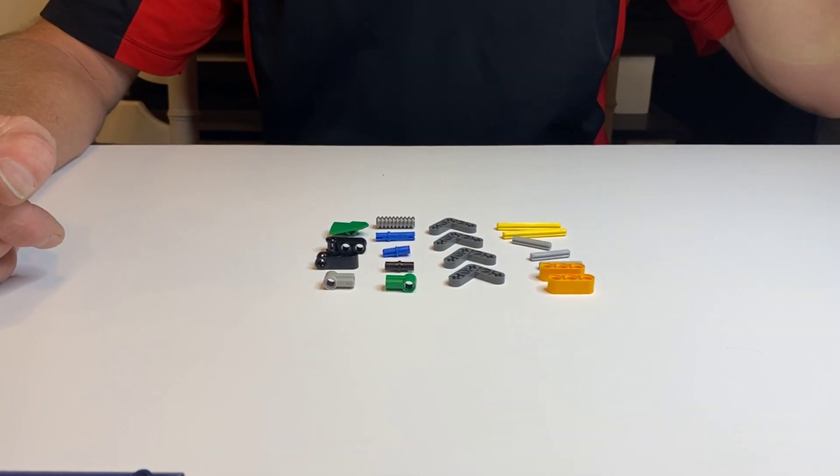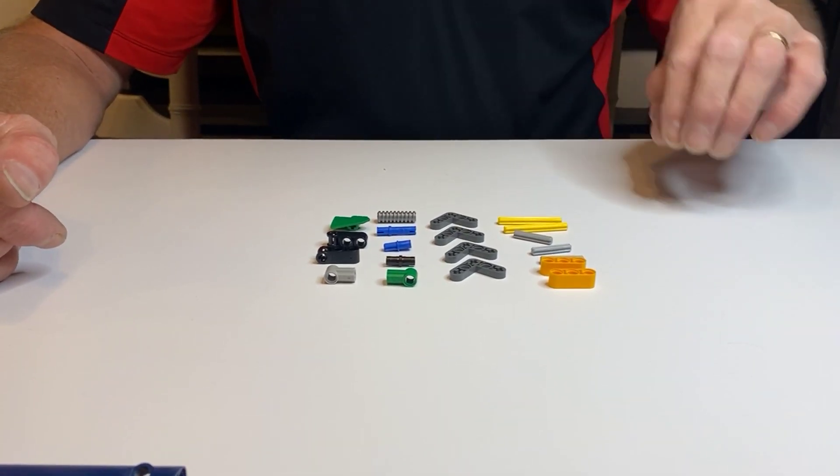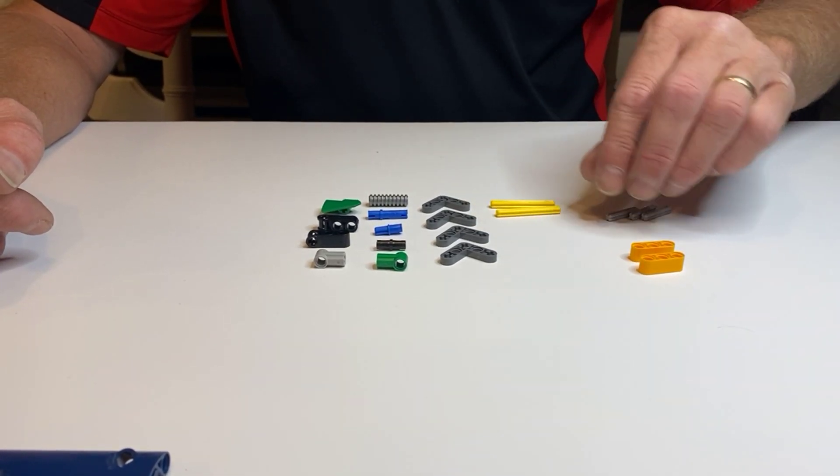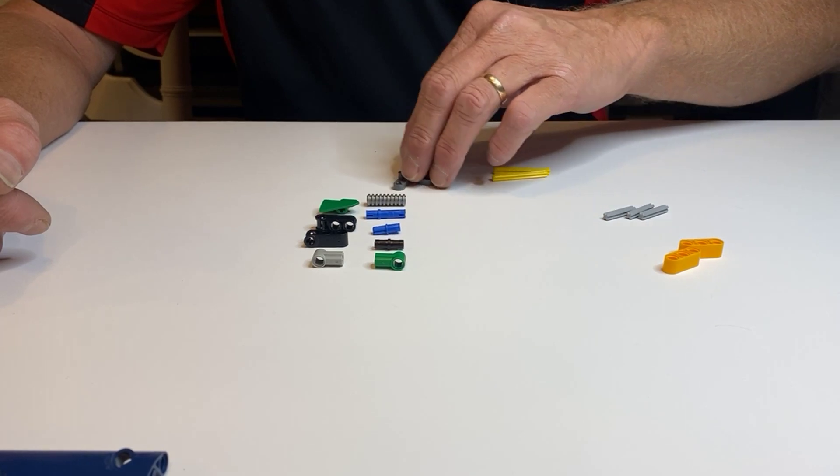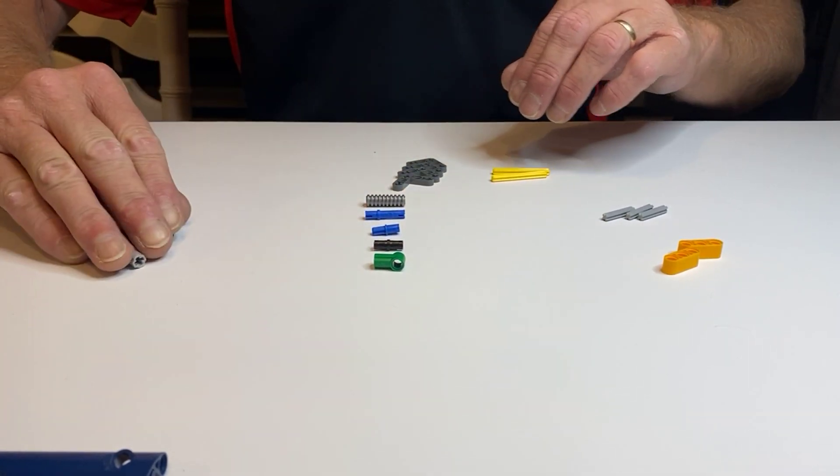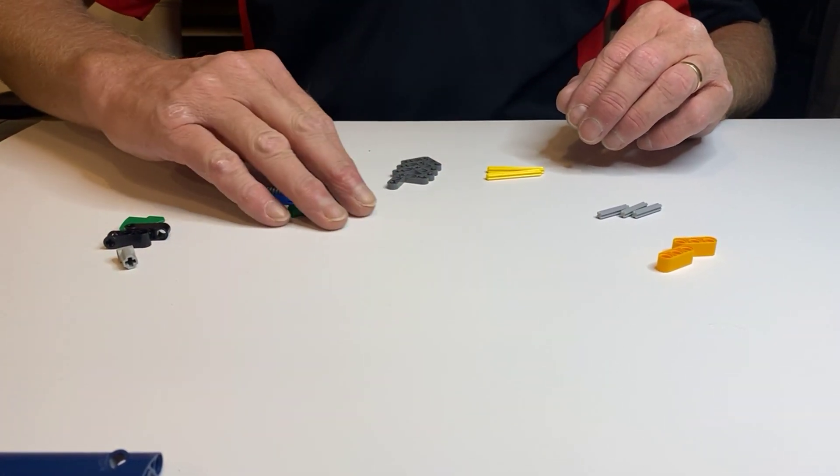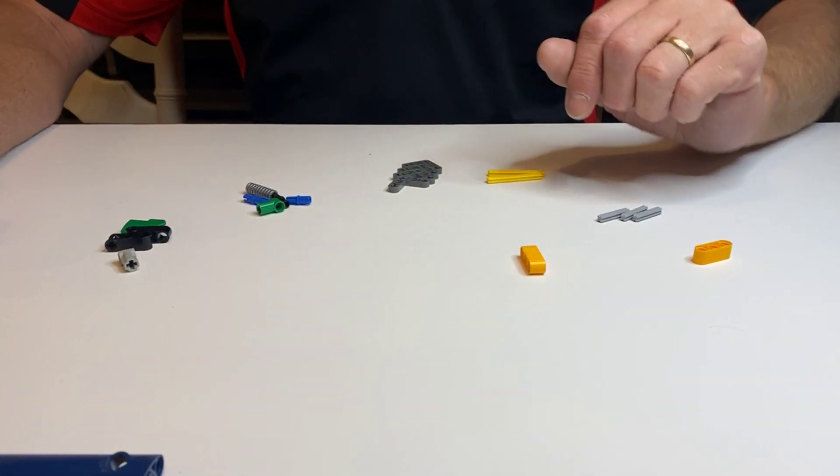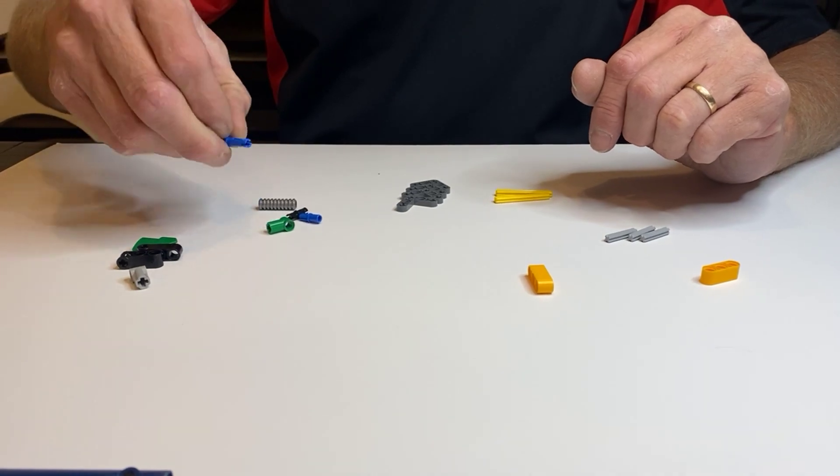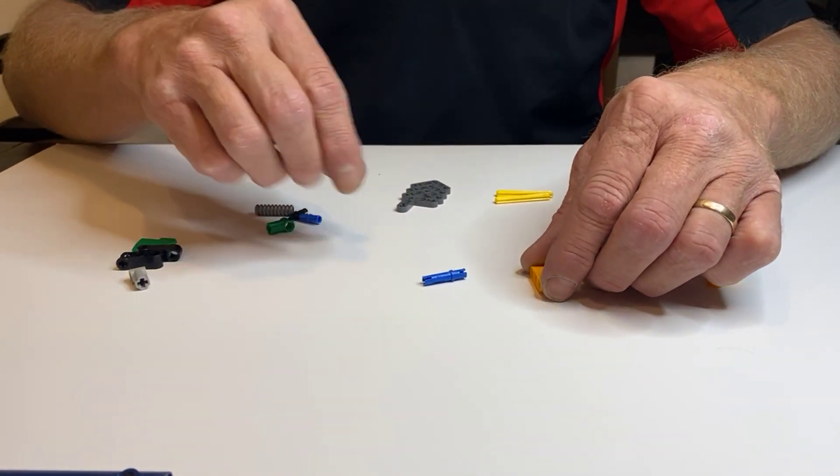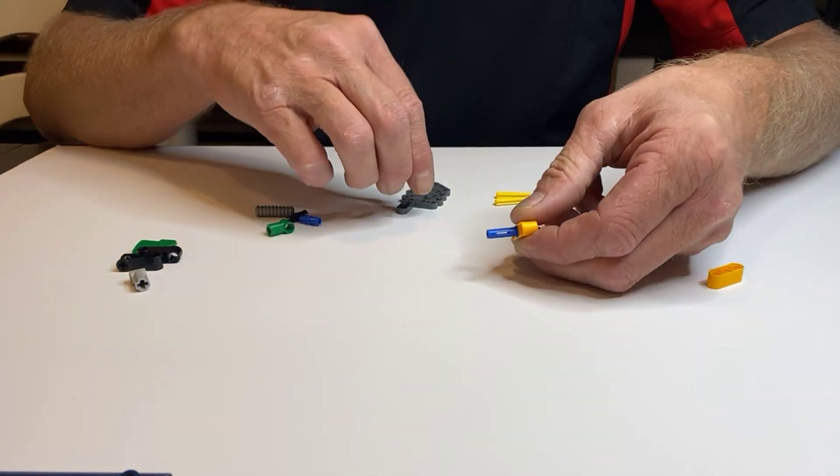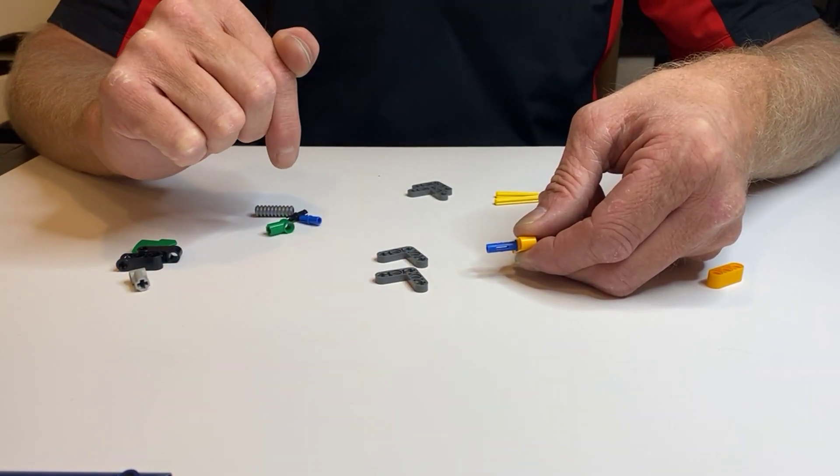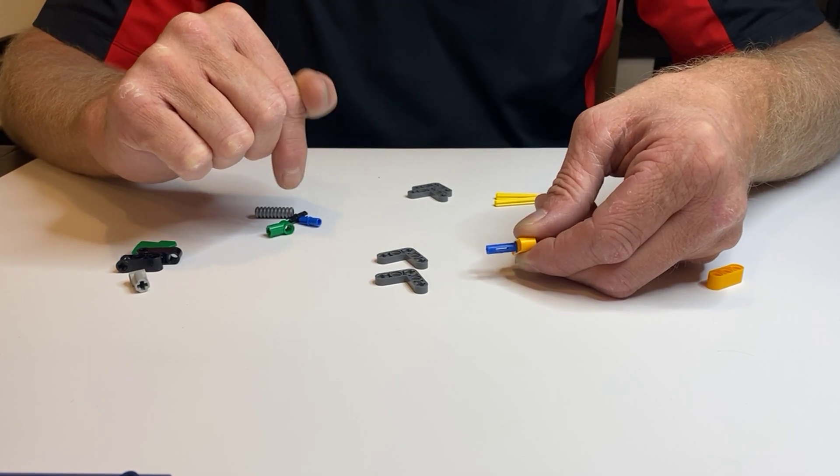Let me move to the side so we can start. We're going to start with our 3m beam and the 3m peg—stick them in there. Then we're going to use two of the 3x3 L-shaped half beams.